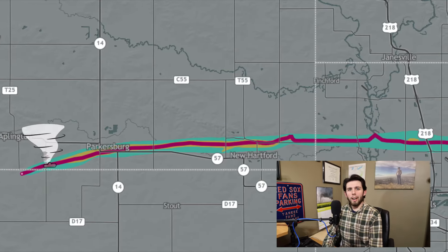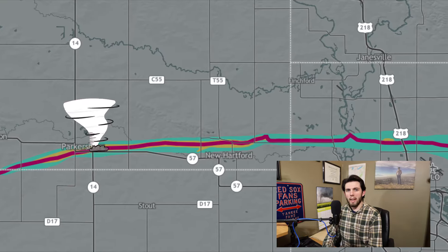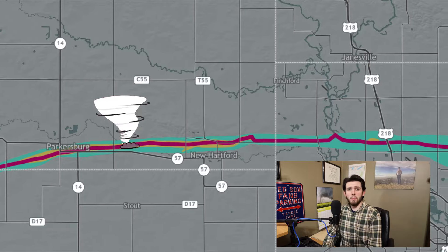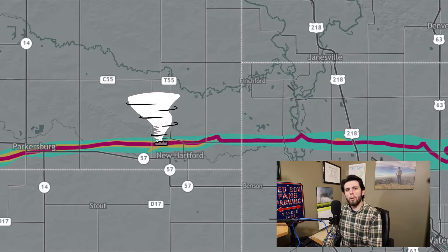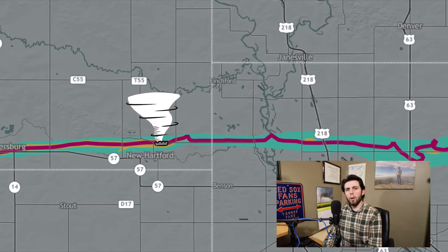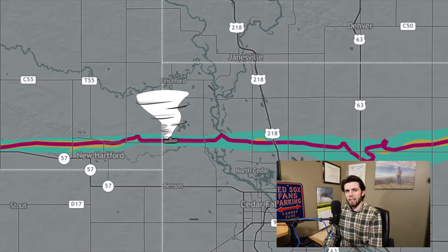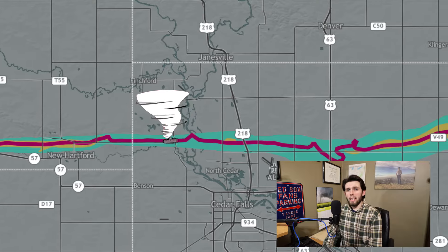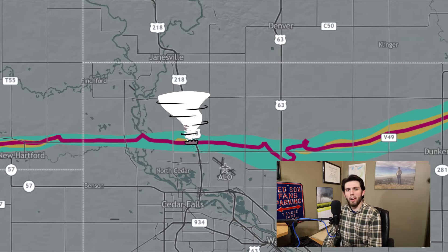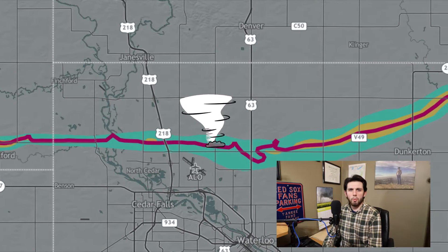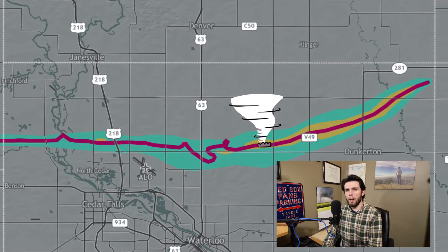Parkersburg was struck relatively early on in the tornado's life cycle, and the tornado would make a direct impact with the south side of town, significantly damaging many homes and businesses, including the town's high school. Further downstream, the town of New Hartford would miss a direct hit, though one of the sub-communities further north would receive a direct hit, damaging several homes, some of which to EF-5 status. After New Hartford, the tornado would continue for another 25 miles over mostly farmland, though several more homes and farmsteads were hit, before the tornado dissipated 43 miles from its origin point.